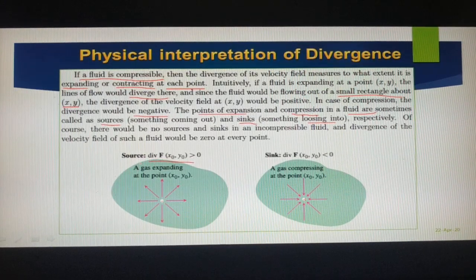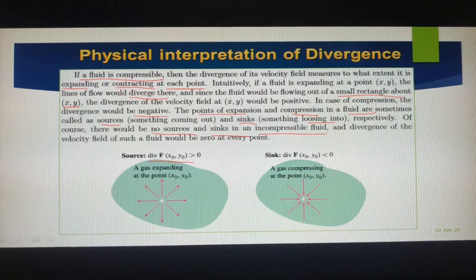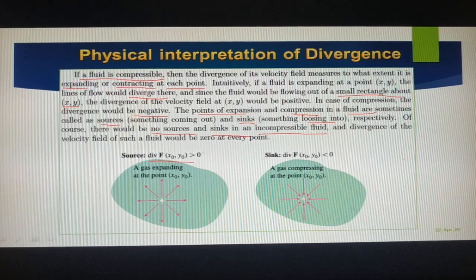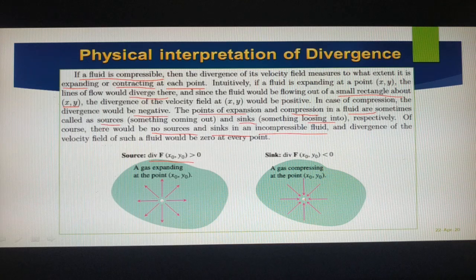In some fluids, there may be no sources or sinks — for an incompressible fluid. If the fluid is incompressible, there may not be any sources or sinks. Such fields we call solenoidal. The divergence of the velocity field of such a fluid would be zero at every point.